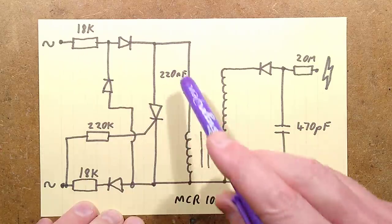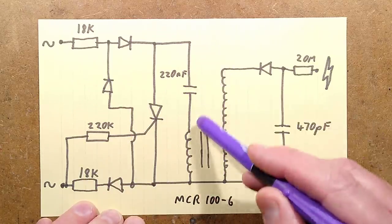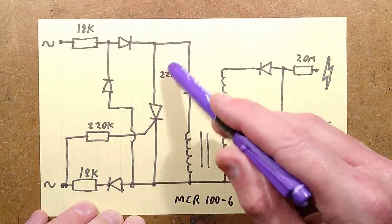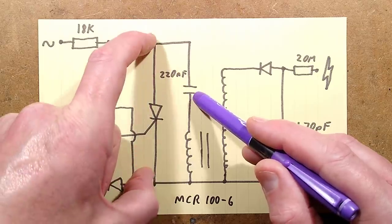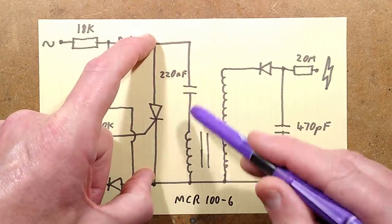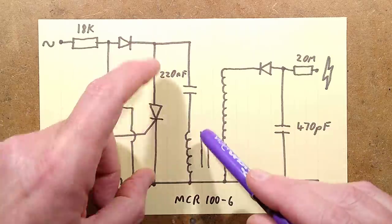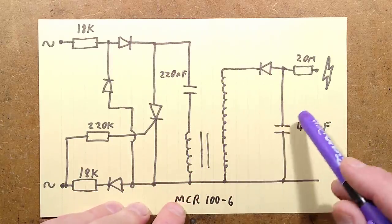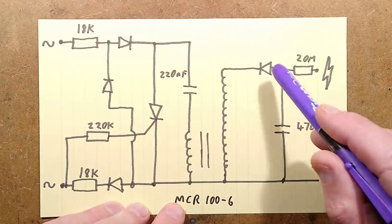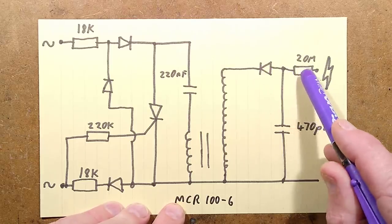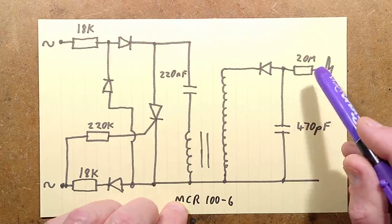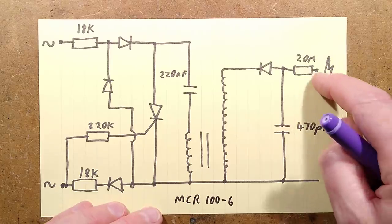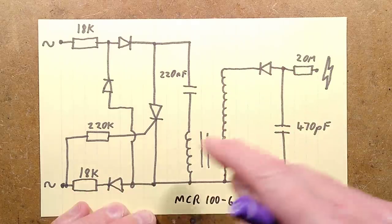On one half of the mains cycle, that capacitor is charged up. On the other half, this thyristor is triggered and it shunts them. When it does, the sudden pulse of current with the coil in series, the capacitor in a loop here, creates a magnetic pulse in the coil that then gets transferred through. Very simple, just one capacitor, one diode to create a negative voltage here.